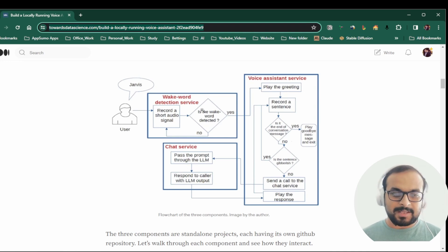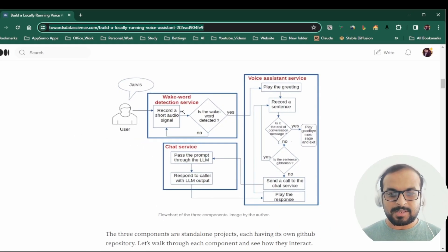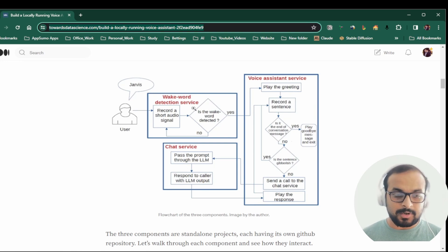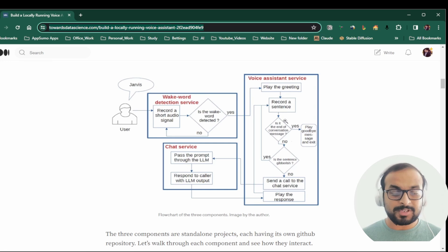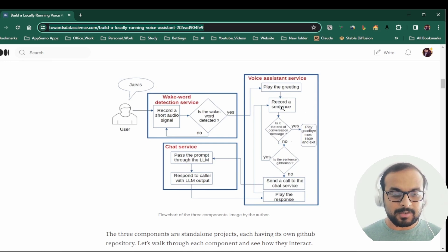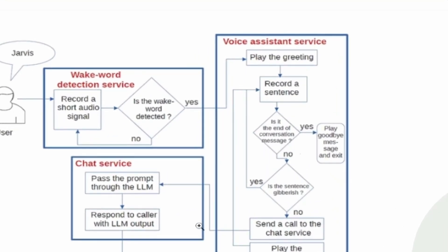Basically, he created three independent services, much like your home assistant — like Siri or Alexa. He created a wake word detection service that will wait for the wake word. Once the wake word is called out, the wake word detection service will trigger the voice assistant service. This voice assistant service is where our Facebook SeamlessM4T model will be loaded, and whatever instructions you give it, it will record that sentence locally and convert it.